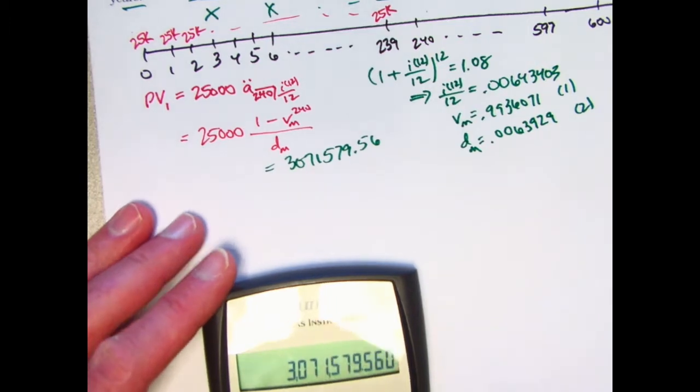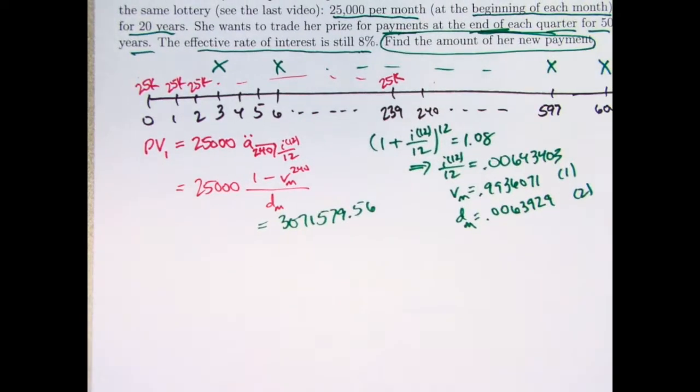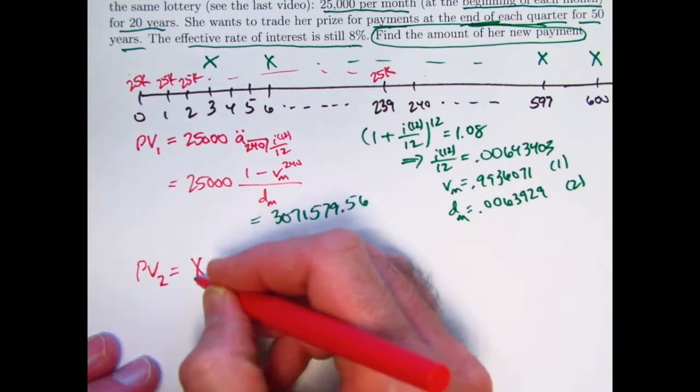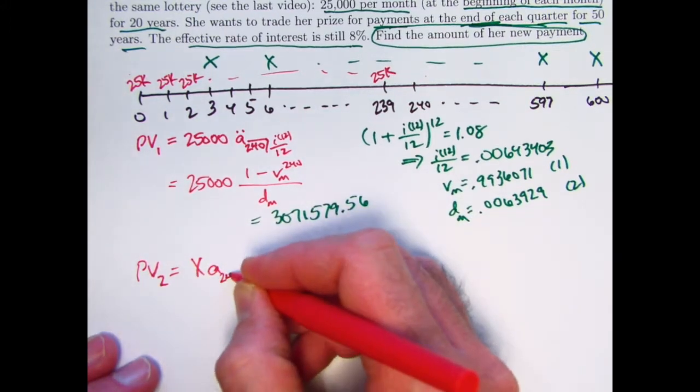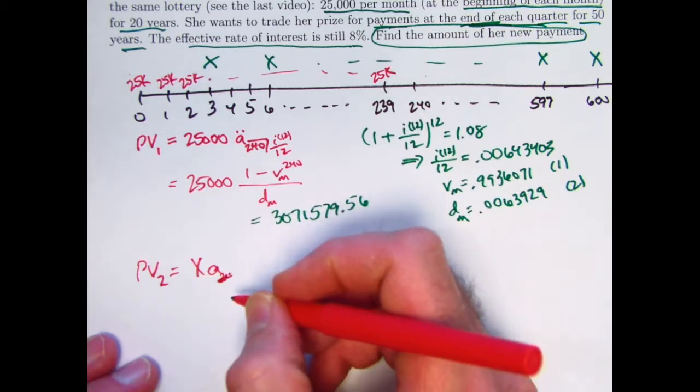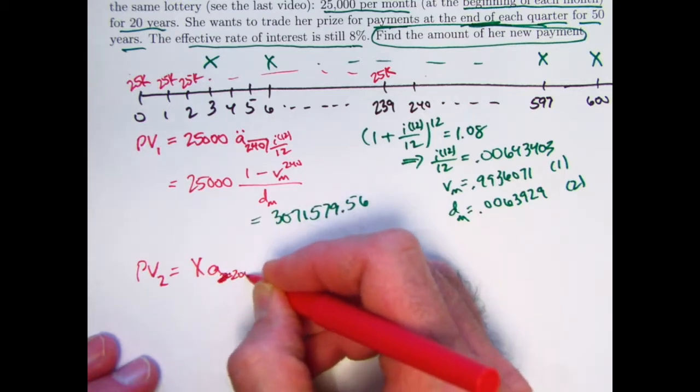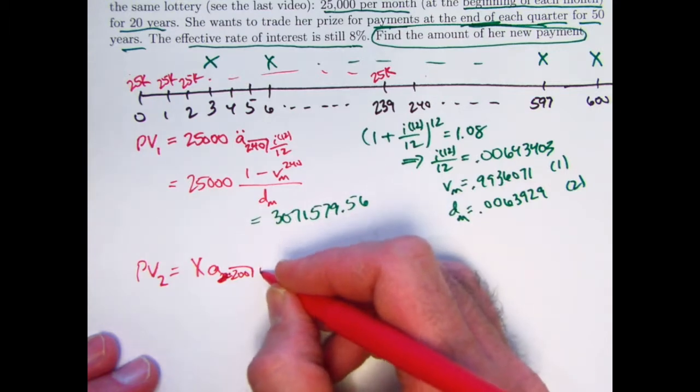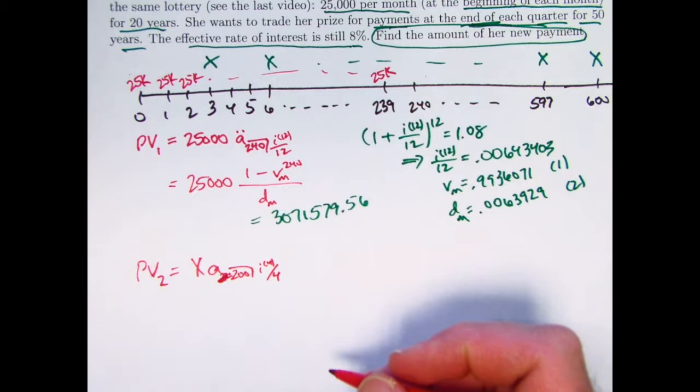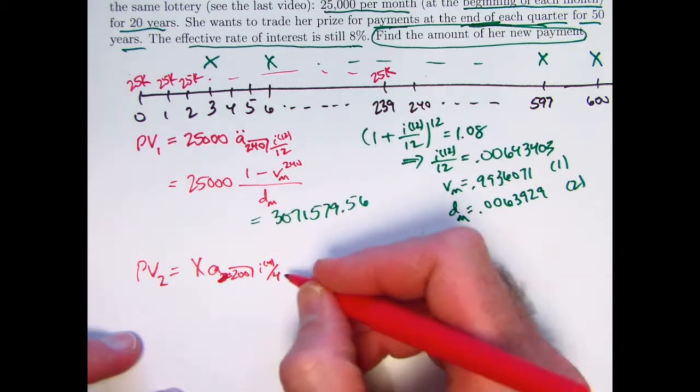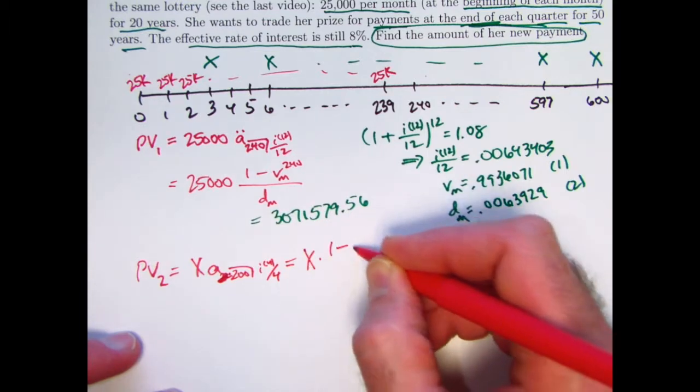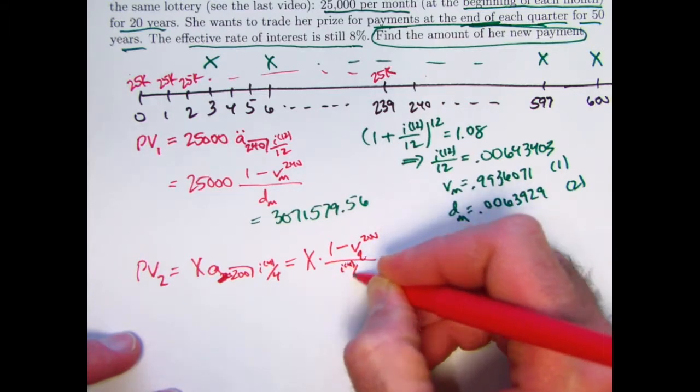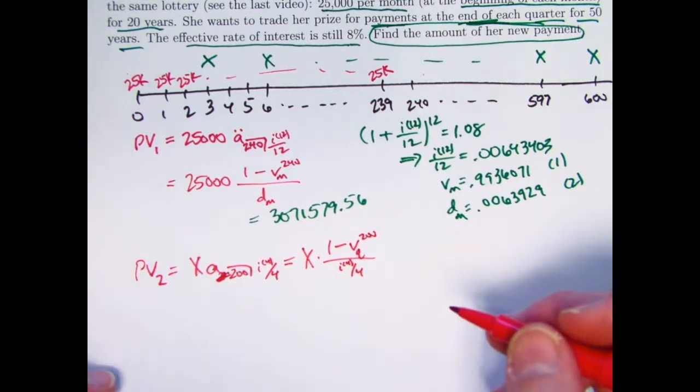What about the present value of the second annuity? PV2. The payments are X. It's an annuity immediate, so no double dots. It's quarterly payments for 50 years. That's going to be 200 payments. And the interest rate is going to be the equivalent quarterly interest rate. You could think of that as I4 over 4, if you like, or you could just call it IQ. No pun intended. And then the formula for this is going to be 1 minus V-sub-Q, say, to the 200th power, divided by I-sub-Q, which I'm labeling as I4 over 4. It's an annuity immediate, so I use I instead of D.